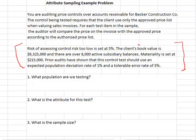The risk of assessing control risk too low is set at 5%. This means the auditor is 95% sure when they draw the conclusion that the control works that they haven't made a mistake. The client's book value is $9,325,000 with over 8,000 active subsidiary balances. This means that sampling is appropriate. There's a large population of outstanding invoices to test and you clearly could not test the entire population. Prior audits have shown that this control test should use an expected population error rate of 1% and a tolerable error rate of 5%. So we can stand or tolerate 5% errors but we only expect there to be 1% errors.